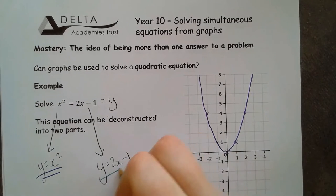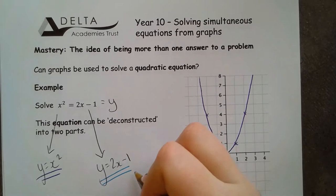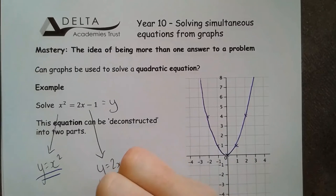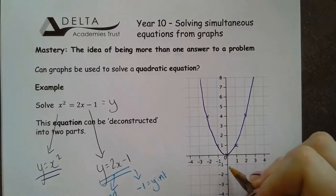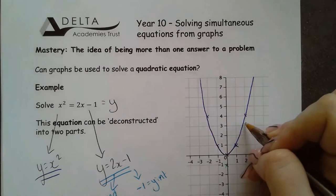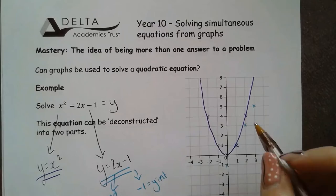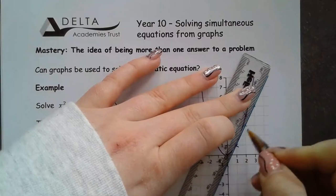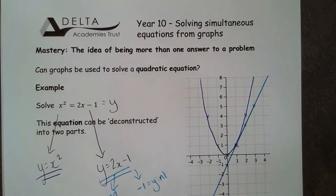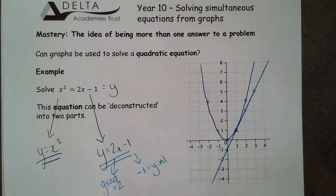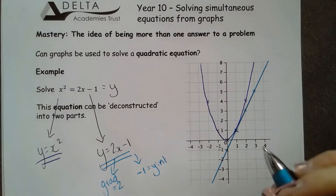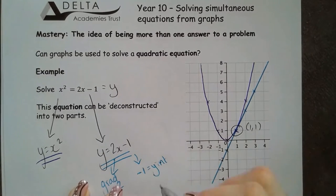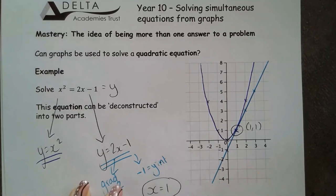I'm then going to look at 2x minus 1. So very similar to the last one but this time I'm going to go through negative 1 as my y-intercept and I've got a gradient of 2. So I go through negative 1, across 1 up 2, across 1 up 2, across 1 up 2 and I connect those points together. This time I've got one solution only. You can see that this curve and the straight line graph intersect just one point here. That one point is the 1, 1 so I've got the value x equals 1 as my only solution.